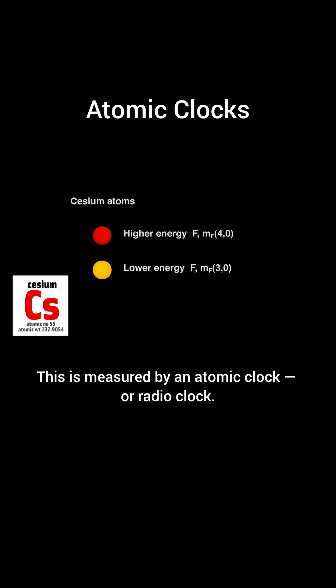This is measured by an atomic clock or radio clock. Atoms in pure cesium exist in two forms: low energy and high energy.